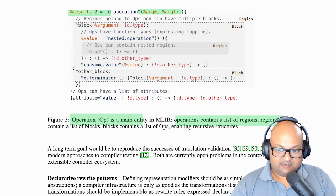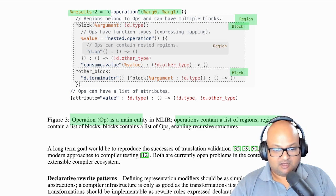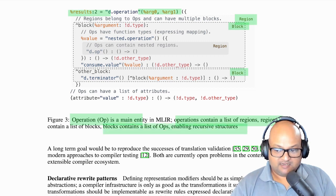So ops contain a list of regions and regions inside them contain lists of blocks. And these blocks can be thought of as basic blocks in the sense of control flow graphs. But then blocks themselves can contain further ops. And this allows you to form nested structures.